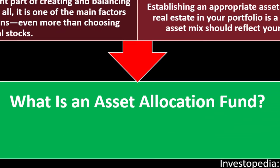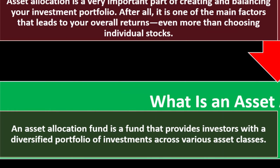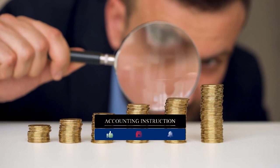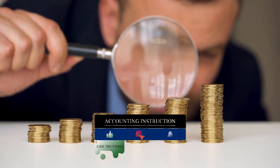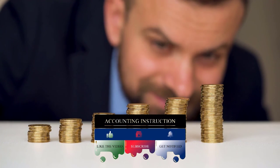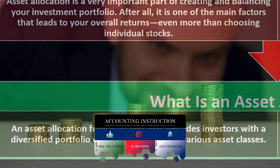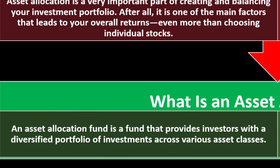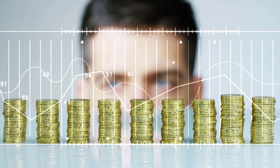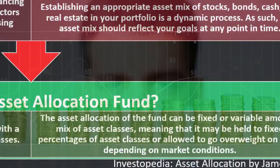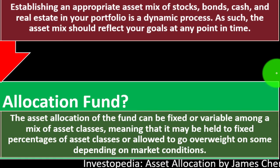An asset allocation fund provides investors with a diversified portfolio of investments across various asset classes within one fund — a useful starting point for investors new to saving for retirement. The asset allocation of the fund can be mixed or variable, meaning it may be held to fixed percentages of asset classes or allowed to go overweight on some depending on market conditions. Considerations include whether to use index funds and what the management costs are.